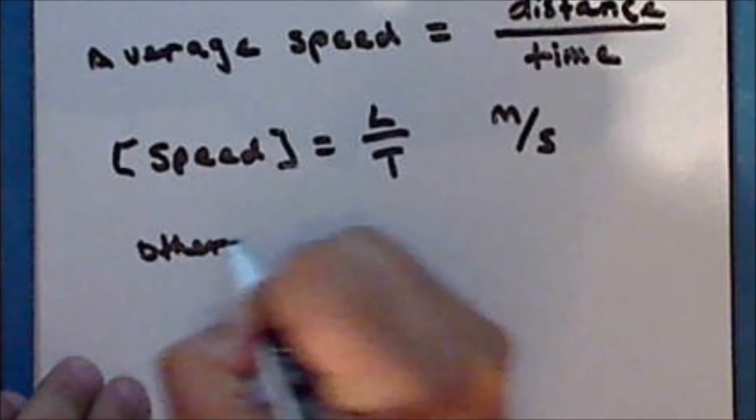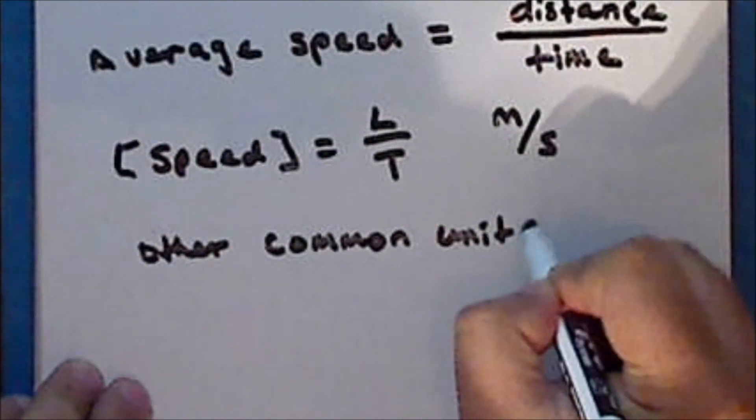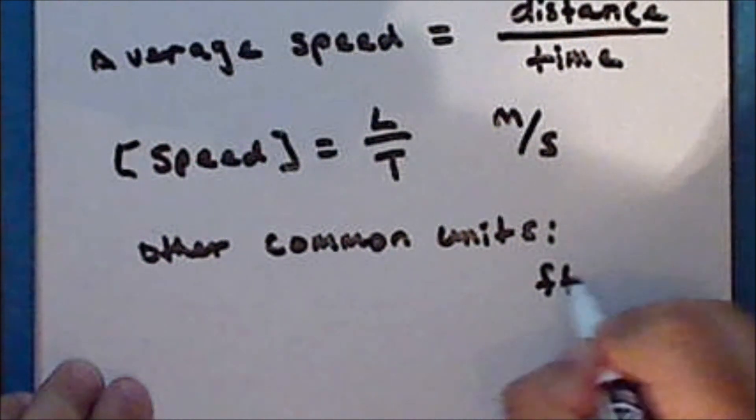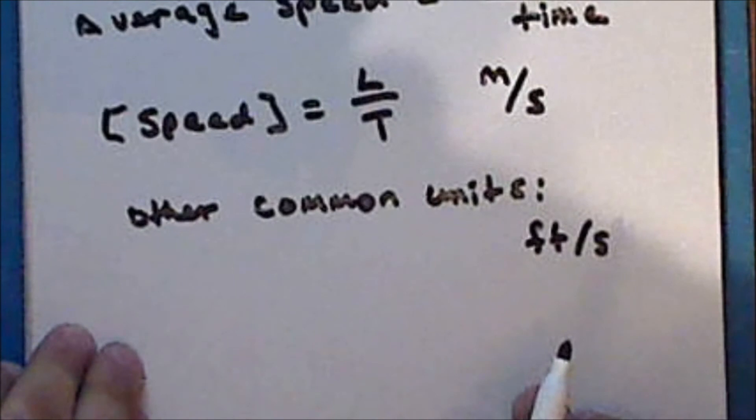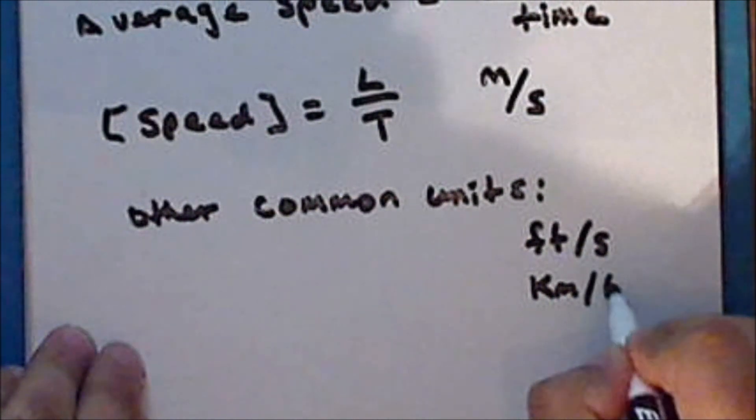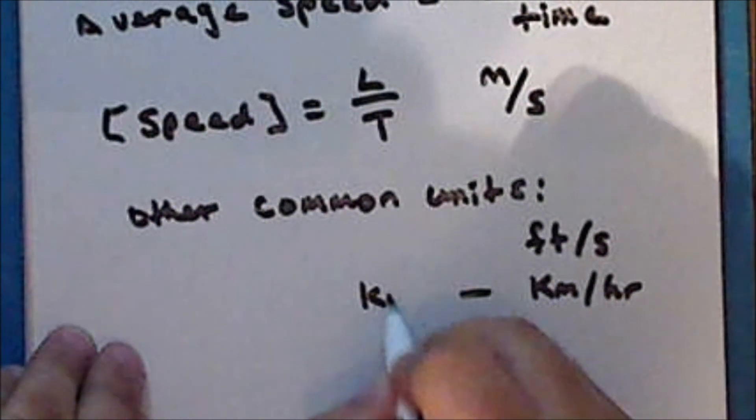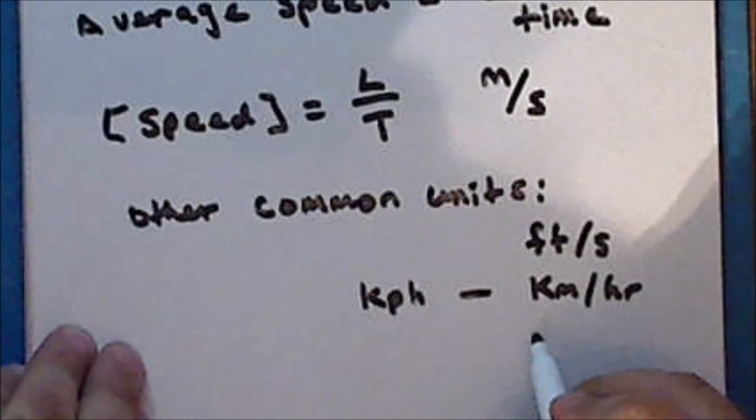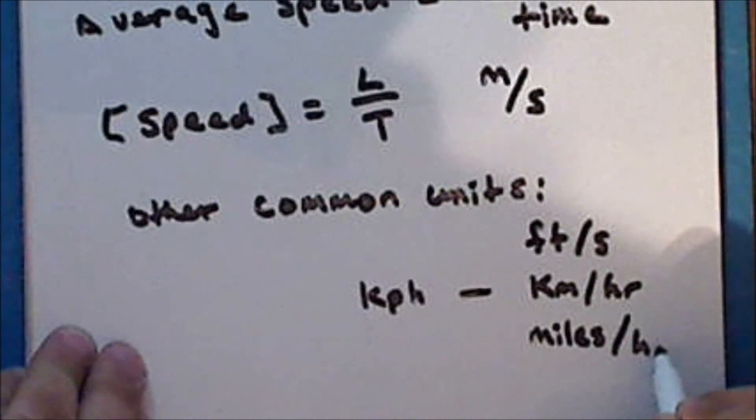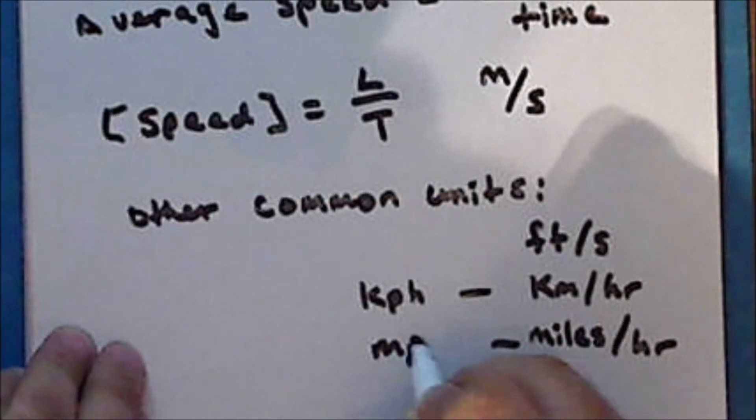Other common units include feet per second, kilometers per hour, which is usually abbreviated KPH, and miles per hour, which is usually abbreviated MPH.